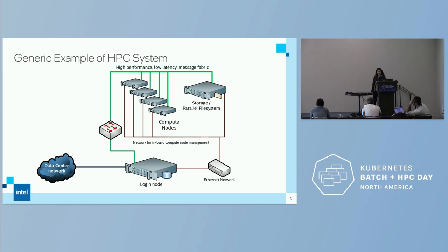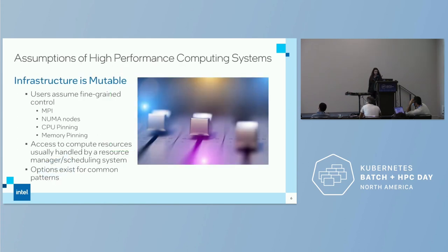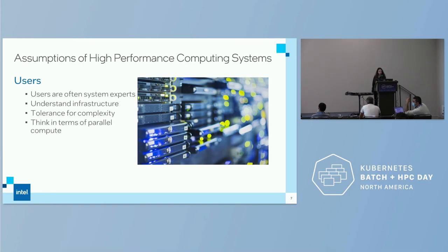Let's start with a generic HPC system. You have compute nodes, some sort of ingress — usually one giant login node — and your storage. Some assumptions come from this. Infrastructure is mutable. Users assume fine-grained control: MPI, NUMA nodes, CPU pinning, and memory pinning. This gives access to compute resources handled by a resource manager and scheduling system. Your users are often system experts who understand infrastructure, have a tolerance for complexity, and think in terms of parallel compute.